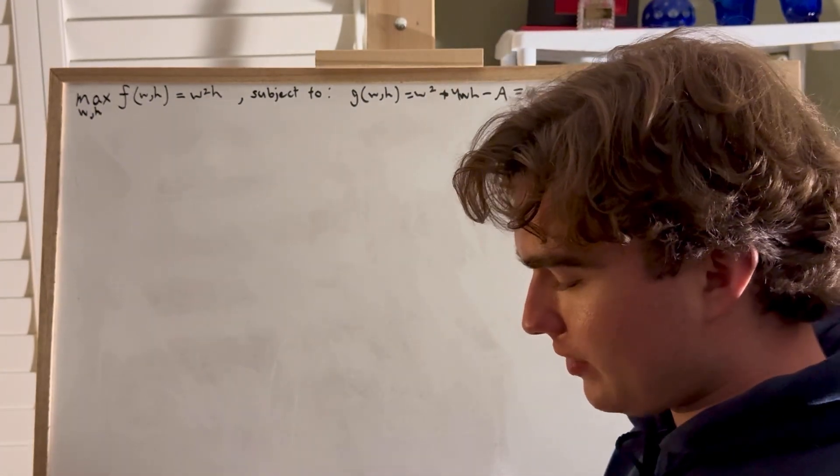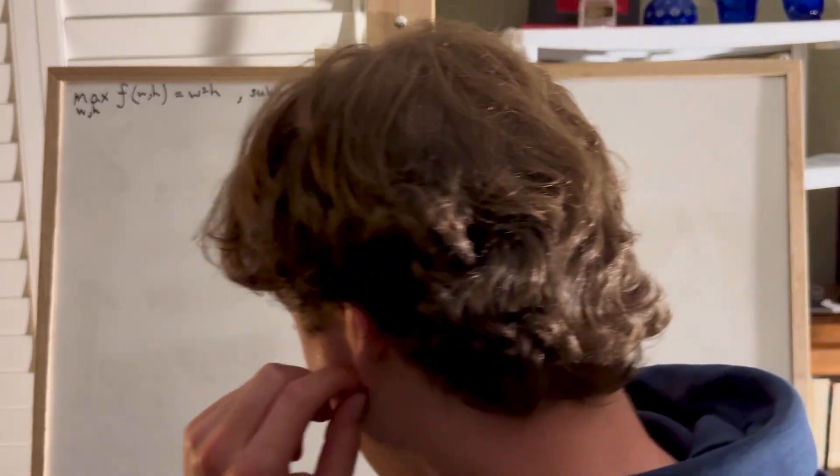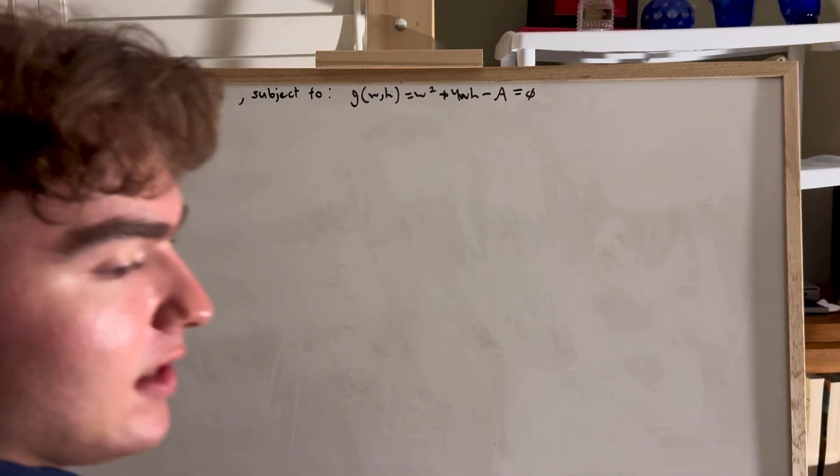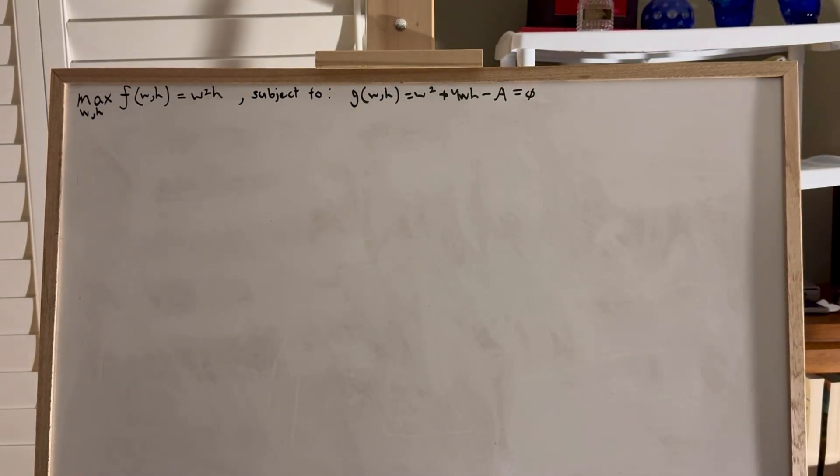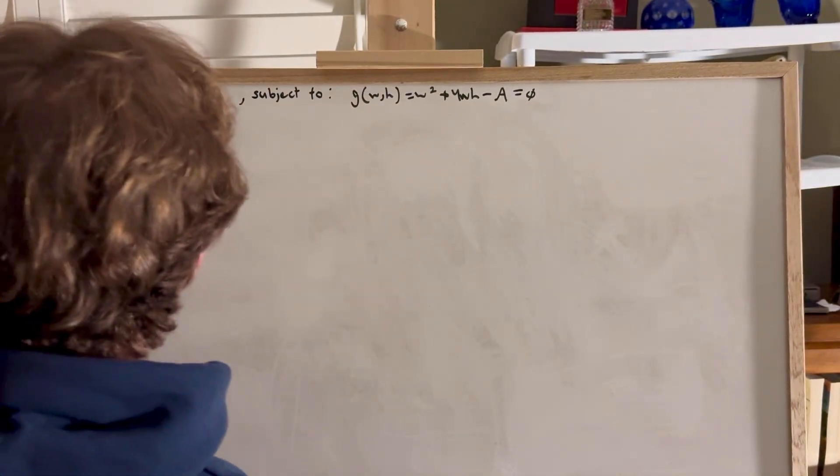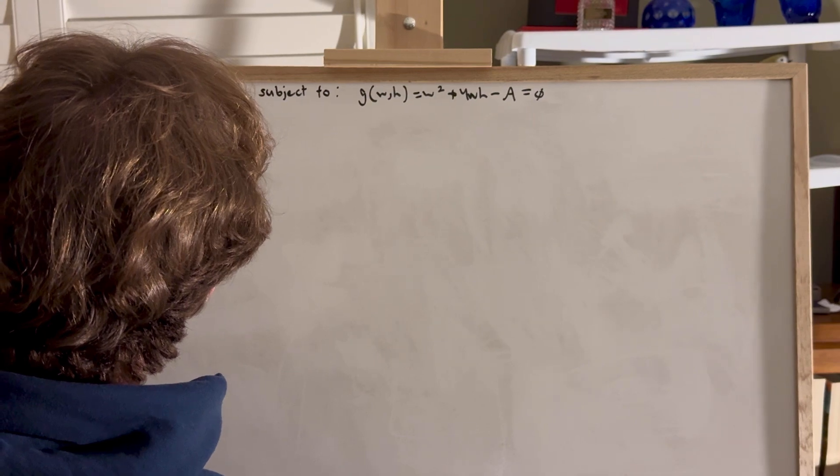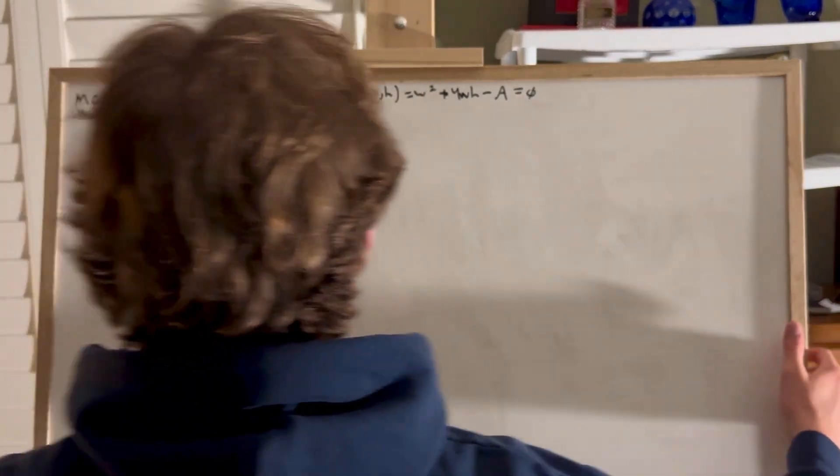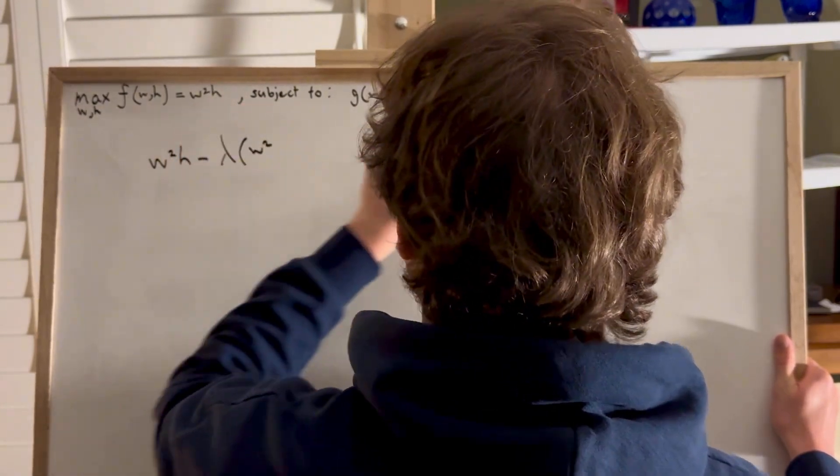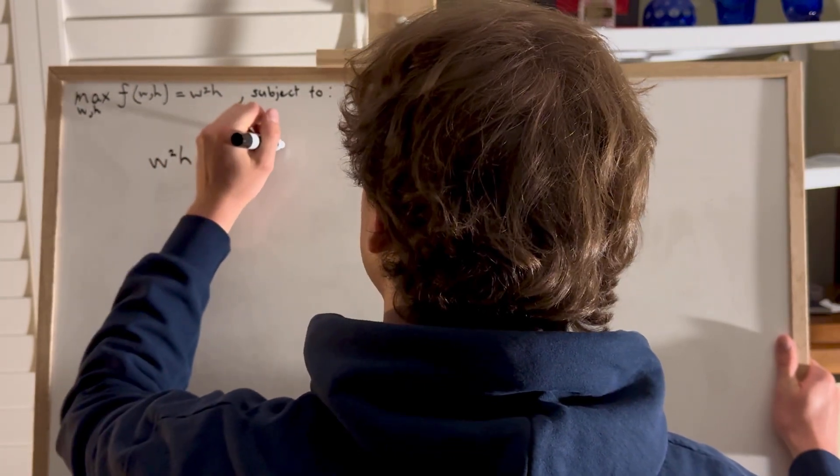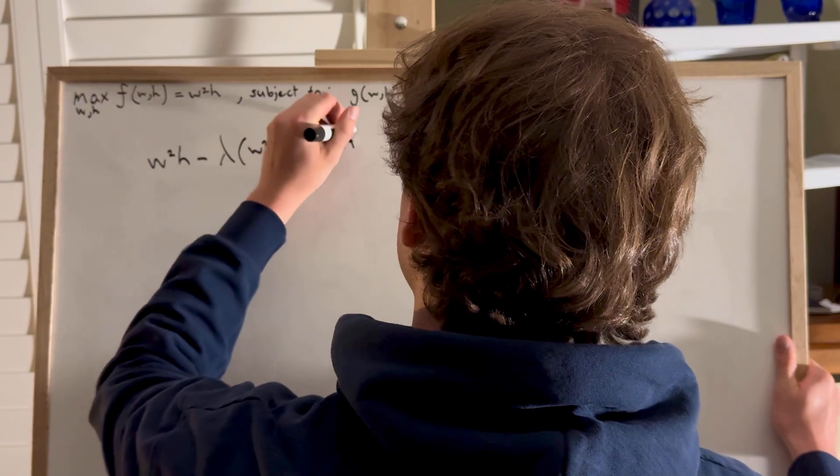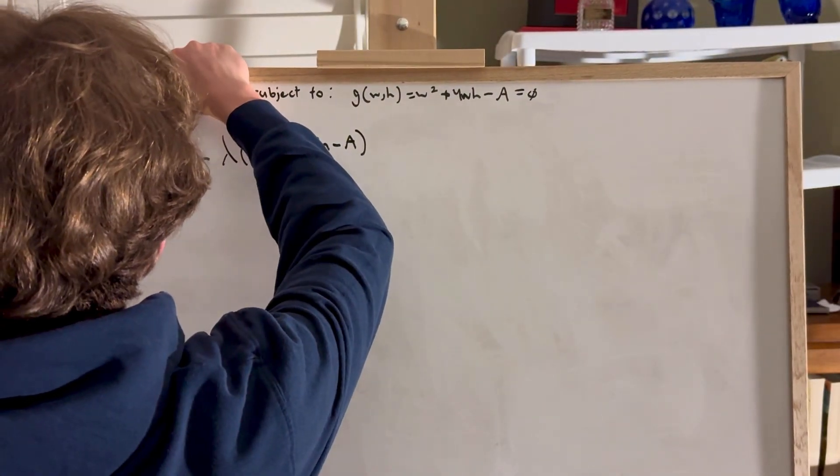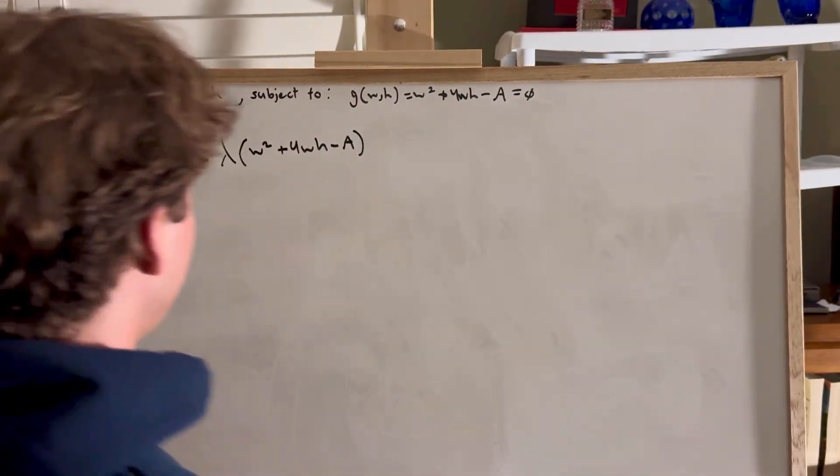So what's our first step? We're going to set up the Lagrangian. If I pronounce things wrong, you just have to let it slide. What is the Lagrangian? You take your maximization, you put it on one side, you put your Lagrangian multiplier, and you put everything in your condition. Done. There's your Lagrangian. This is your L for Lagrangian, your L of wh equals that.